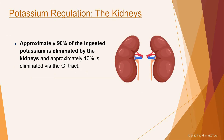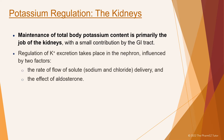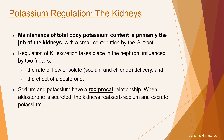Approximately 90% of the ingested potassium is eliminated by the kidneys, and approximately 10% is eliminated via the GI tract. In individuals with normal renal function, the kidneys are responsible for elimination of about 95% of the daily potassium load, with the remainder exiting through the gut. Potassium is freely filtered by the glomerulus and then reabsorbed by the proximal tubule and ascending limb such that only a small amount reaches the distal nephron. Regulation of potassium excretion takes place in the nephron, influenced by two factors: the rate of flow of solute — sodium and chloride delivery — and the effect of aldosterone. Sodium and potassium have a reciprocal relationship. When aldosterone is secreted, the kidneys reabsorb sodium and excrete potassium.